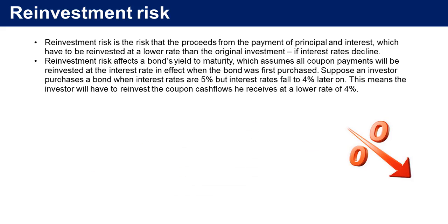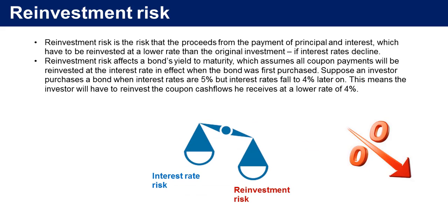It should be noted that interest rate risk and reinvestment risk have offsetting effects. That is, interest rate risk is the risk that interest rates will rise, thereby reducing the bond's price, while reinvestment risk is the risk that interest rates will fall, thereby reducing the rate at which the cash flows are reinvested. A strategy based on these offsetting effects is called immunization, and we're going to talk about it later in this module.